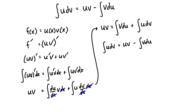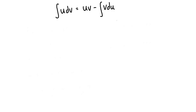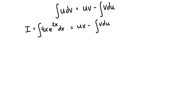Now let's use this in a problem. Let's say we want to solve the integral of 4x·e^(2x) dx by parts. You'll often see the solution written as u·v minus the integral of v du. If you're not familiar with this, it can be confusing — what is all this stuff?